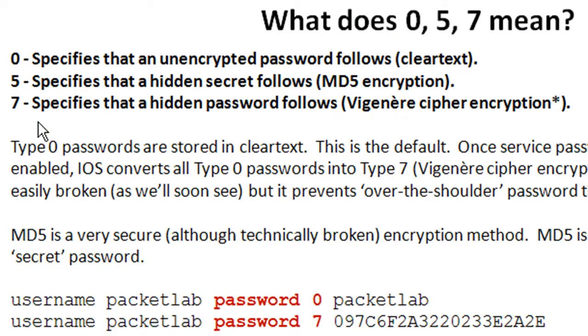The Type 7, which we saw previously, specifies that a hidden password follows the Vigenère Cipher Encryption. That's Cisco's way of encrypting a Type 7 password.